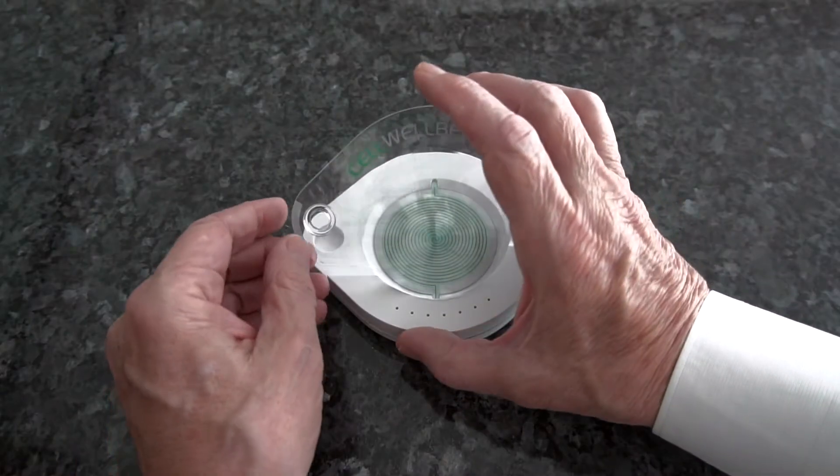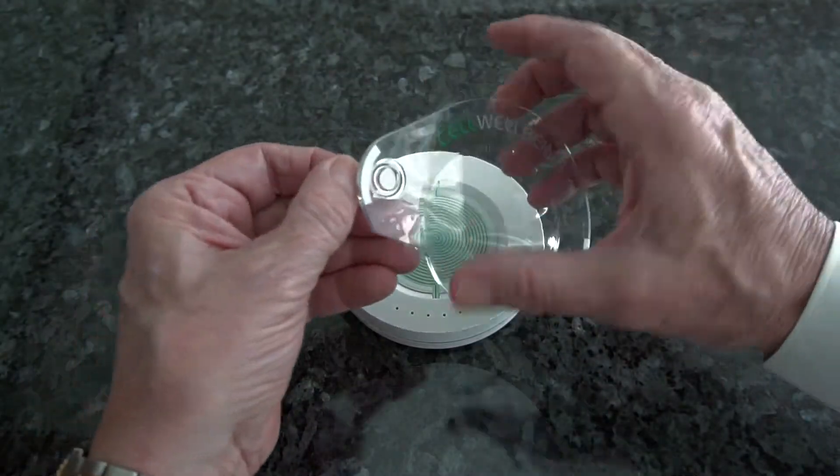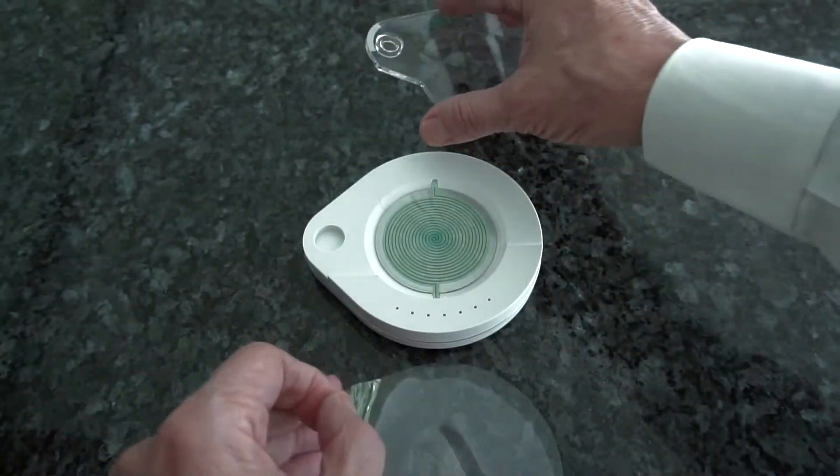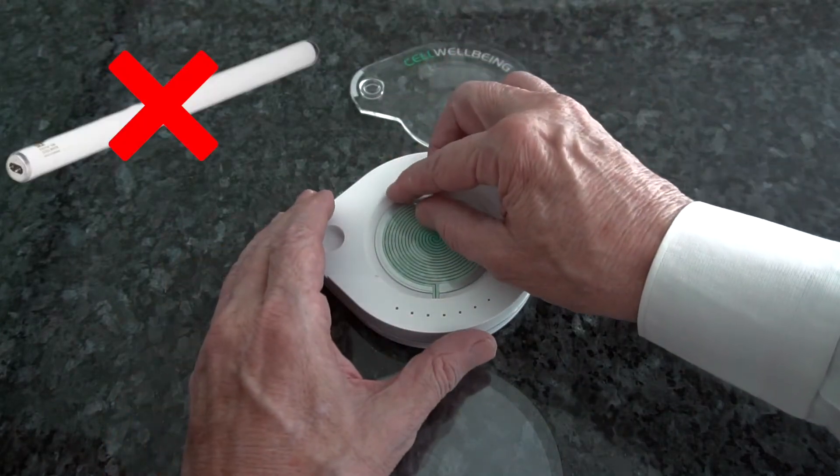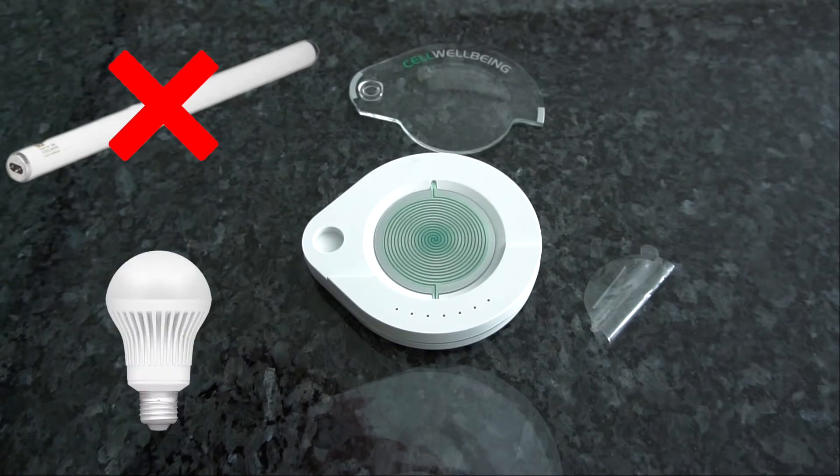If you have not done so, please remove the three clear protective covers. Do not place the S-Drive directly under radiating fluorescent strip lights or energy-saving bulbs. Normal light bulbs and LEDs are perfectly OK.